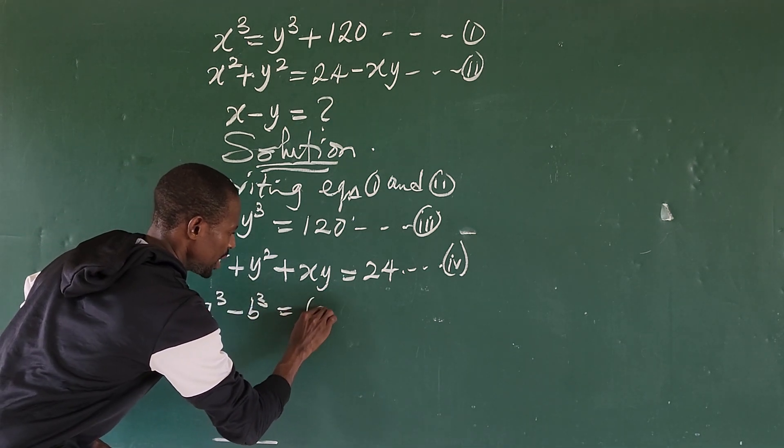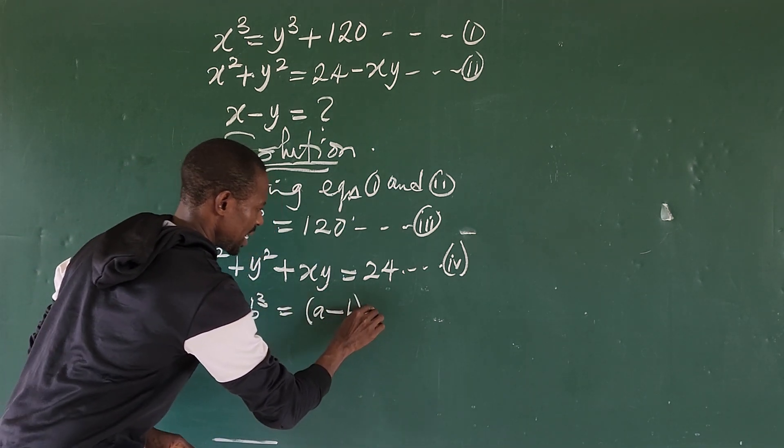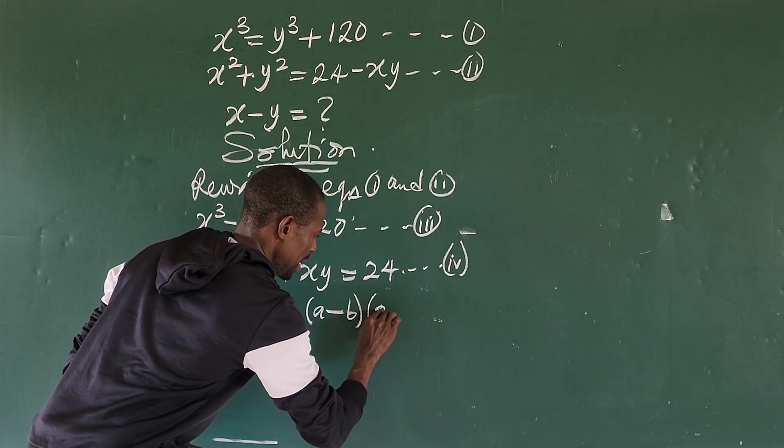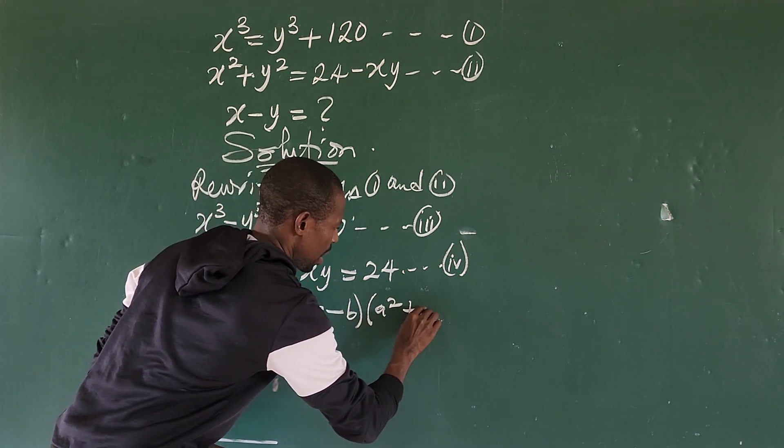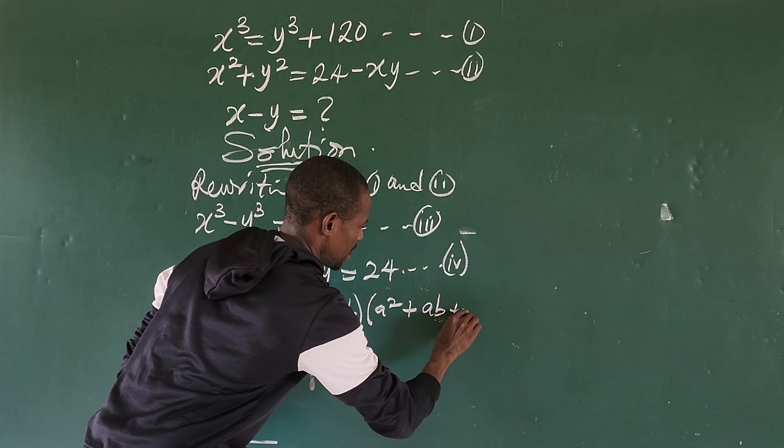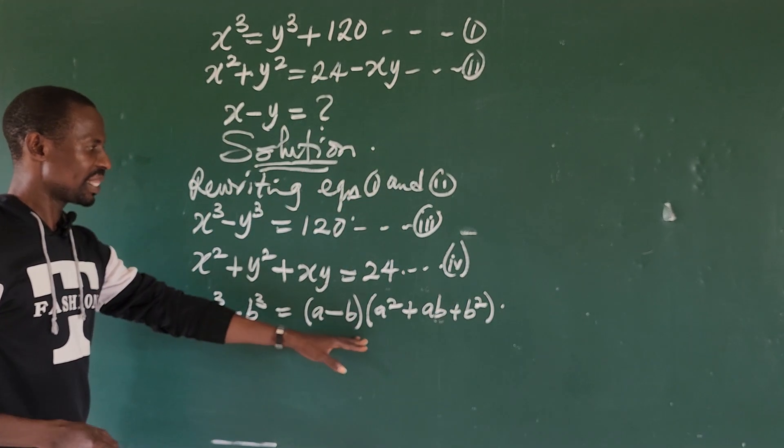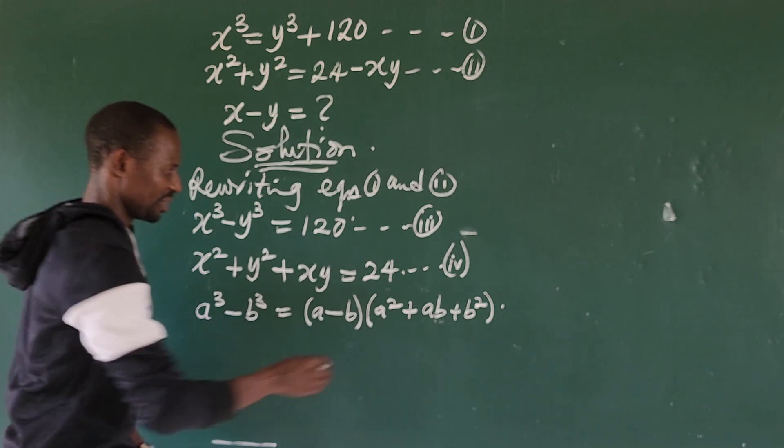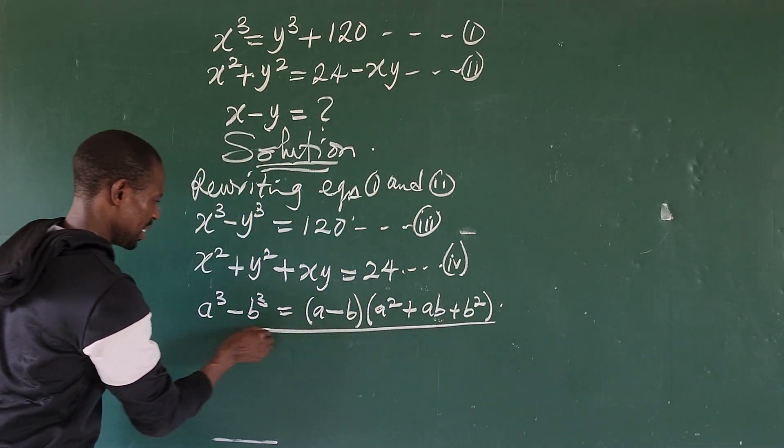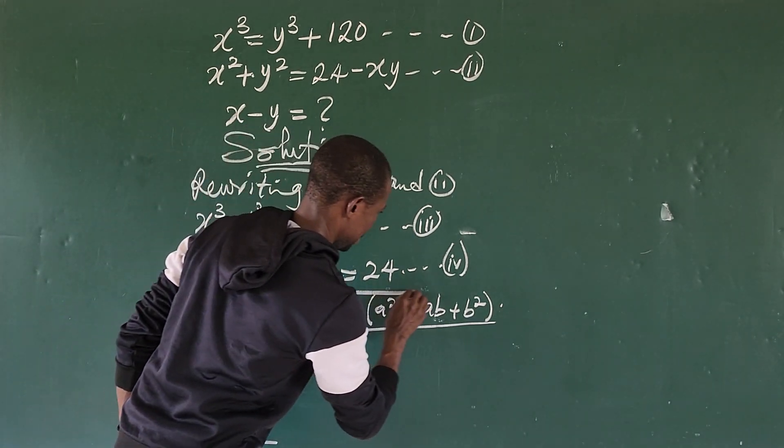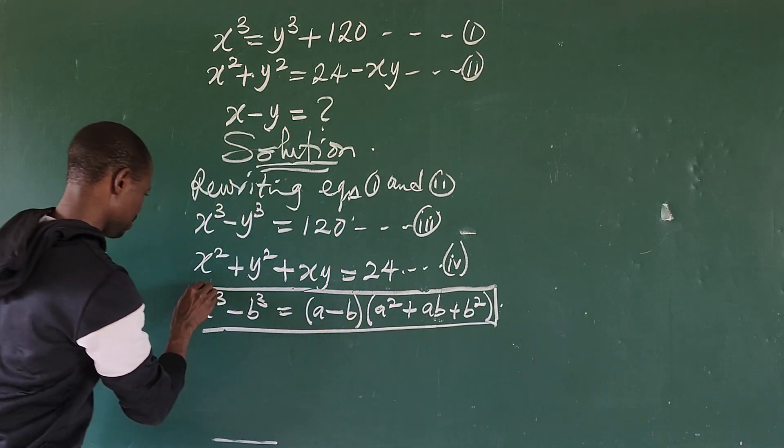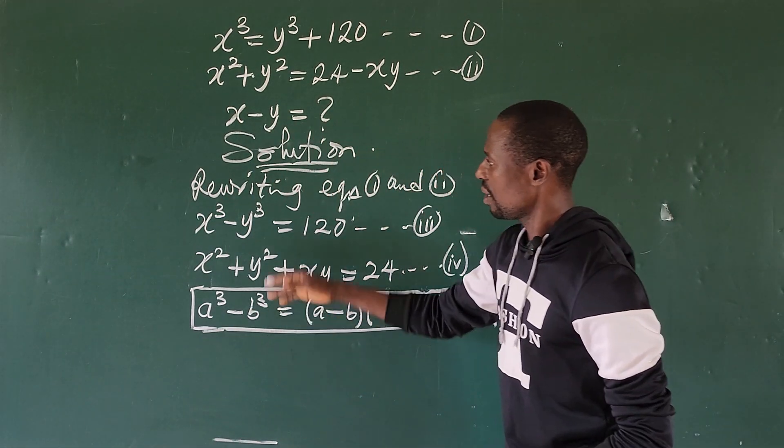Remember this equation? Good. So let's keep this as a special algebraic identity we're going to make use of. From here now we can rewrite equation three again.